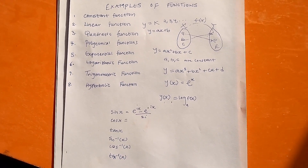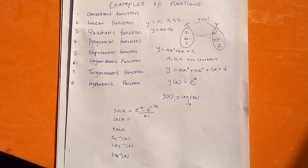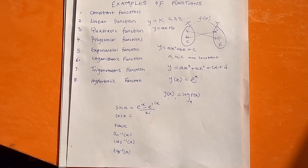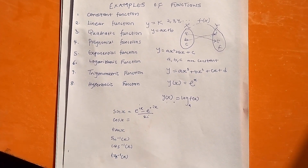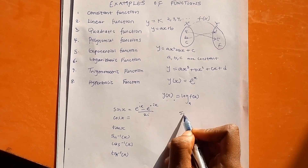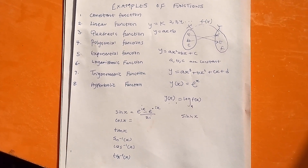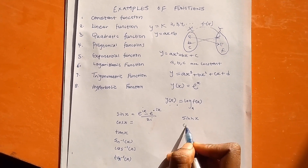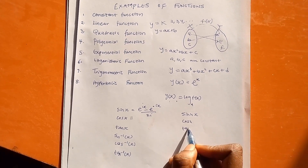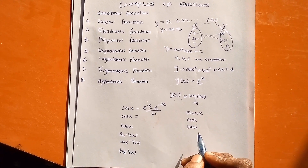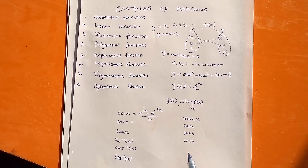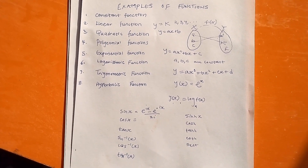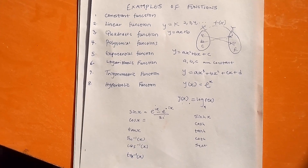Lastly, number eight is the hyperbolic function. The hyperbolic function is in some ways similar to the trigonometric function, but they have their differences. For instance, instead of sin x, it is called sinh x — the h is added to make it 'shine' — and cos becomes cosh. We also have tanh and their inverses, as well as cotangent, secant, and the rest. This is where we'll be stopping for today. Thank you so much, you're welcome.